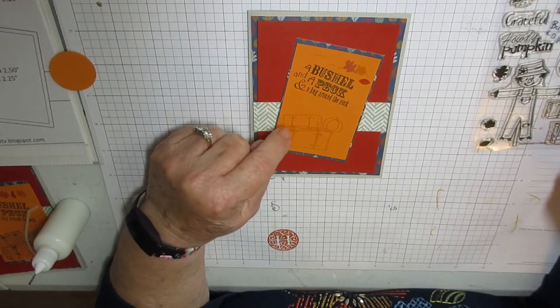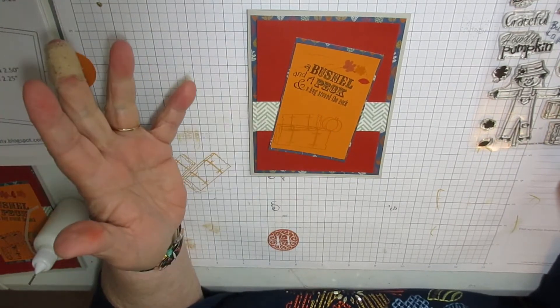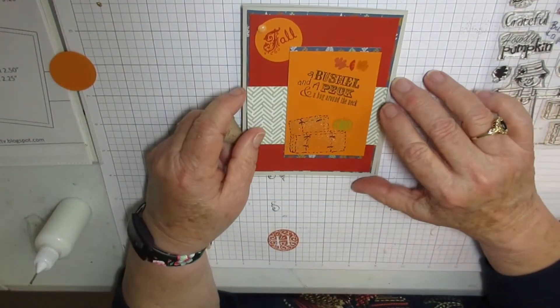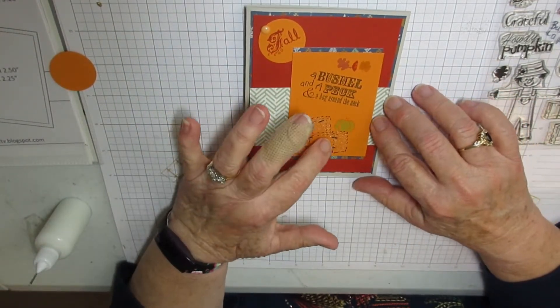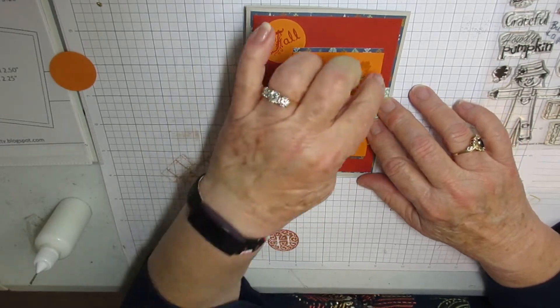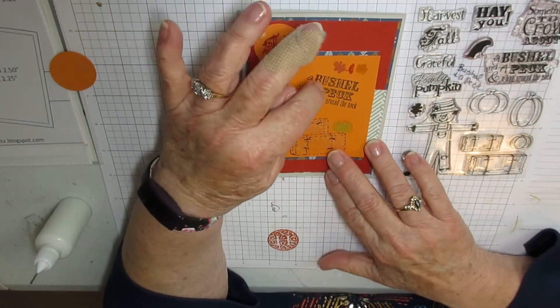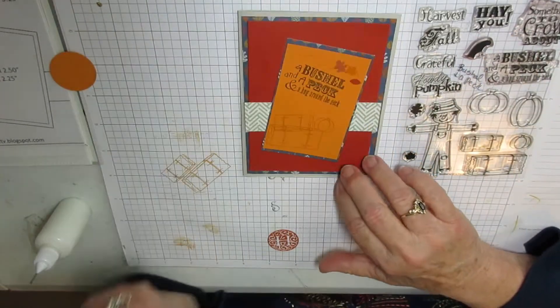I used a bushel and a peck and a hug around the neck, which is right up here. Then I did the two bales of hay and a pumpkin. My first one I actually decorated the bales of hay and the pumpkin, did some coloring in there, and then I put some little leaves. The leaves are in the stamp set so you can do whatever you want.